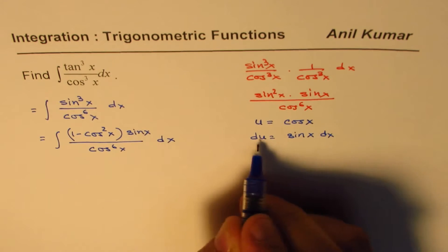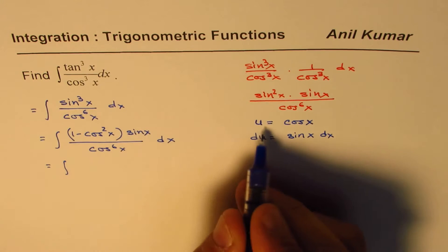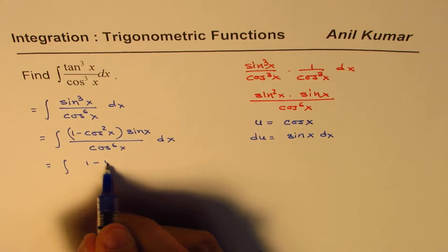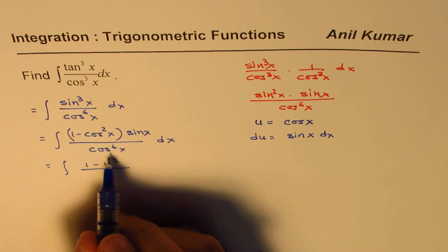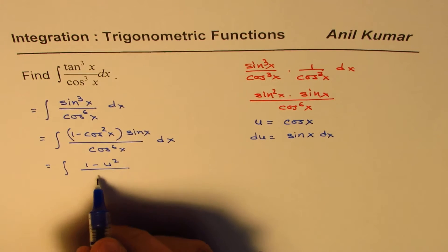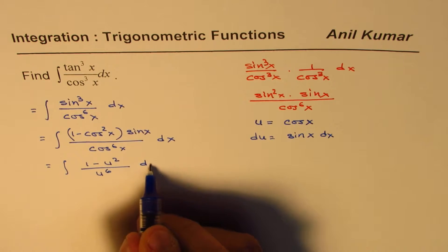So sine x dx becomes du, so we could now write this as 1 minus u square over u to the power of 6. And sine x dx is du.